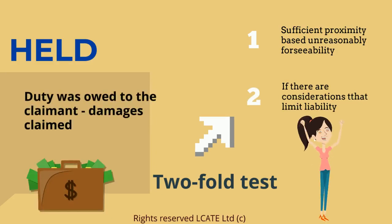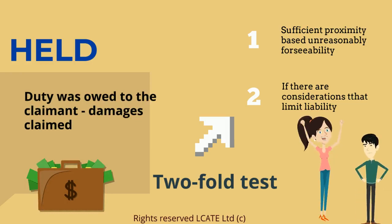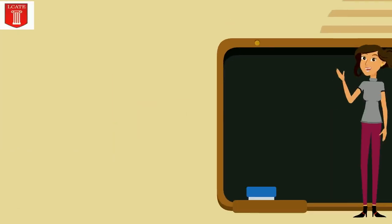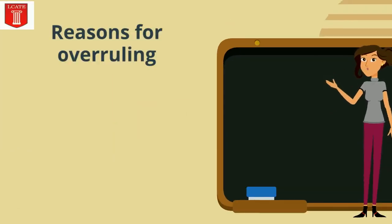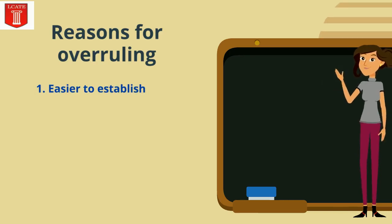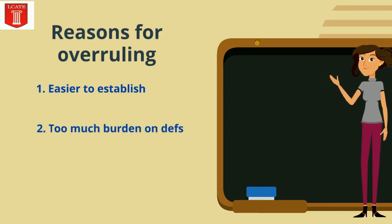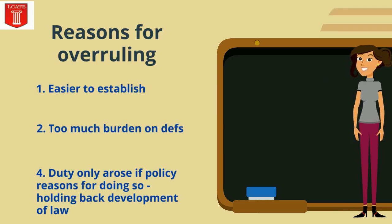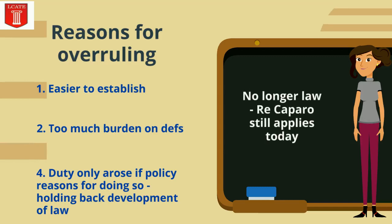However, this particular case has been highly criticised and since then has been overruled. There were many reasons for overruling the two-fold test. One, it was easier to establish, giving rise to many claims. Too much burden on the defendants. A duty only arose if there were policy reasons for doing so, holding back the development of law.